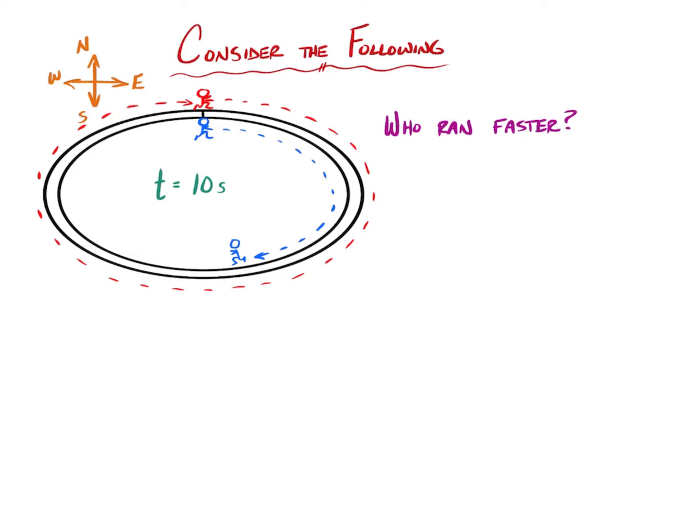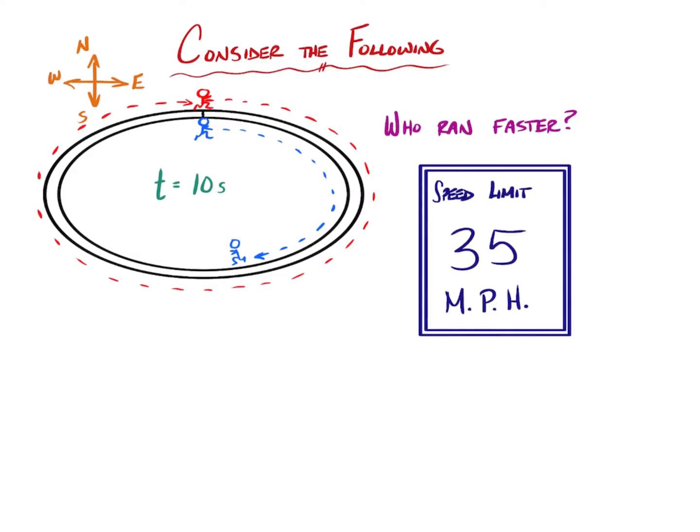So we have to think about speed limits as an example. If you see a speed limit sign, 35 miles per hour, the miles per hour is just division. It's miles divided by hours or basically some length divided by some amount of time. A speed is just essentially some length, some measurement of length divided by some measurement of time.